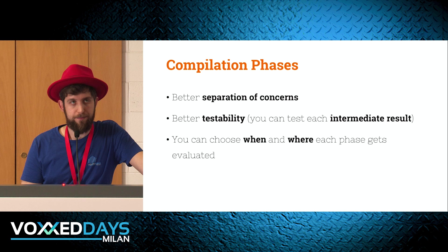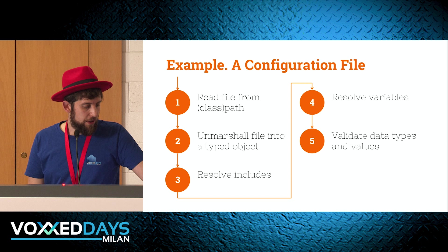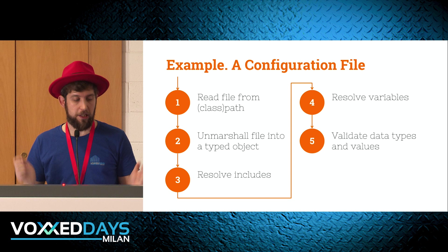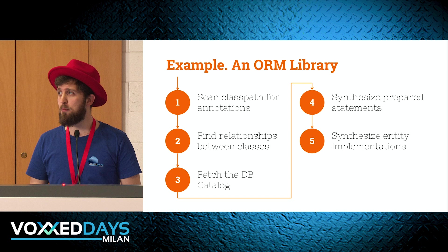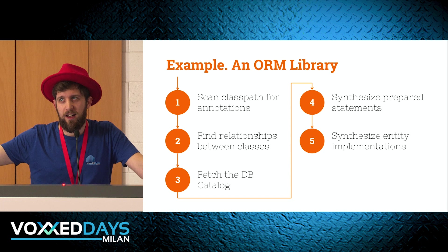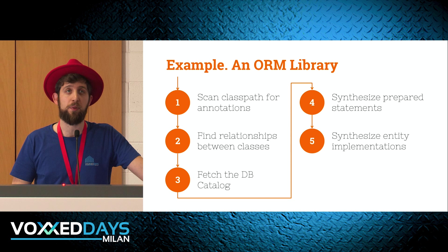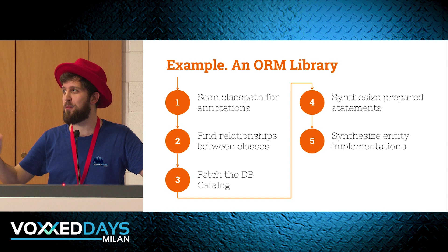You can also choose when and where each phase gets evaluated. A few quick examples: reading a file from the classpath, unmarshalling it into typed objects, resolving includes, resolving variables, validating data types — those are phases. Another example: an ORM library like Hibernate — scanning the classpath for annotations, finding relationships between classes, fetching the DB catalog, synthesizing prepared statements, synthesizing entity implementations. And for our DI framework: scanning classpath for annotations, finding relationships between classes, verifying dependencies are satisfied, finding a cycle-free path, and then synthesizing factories.